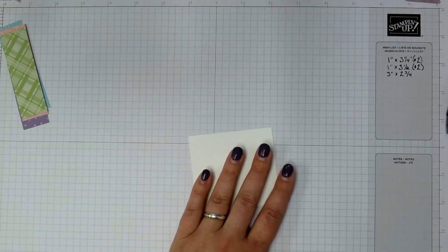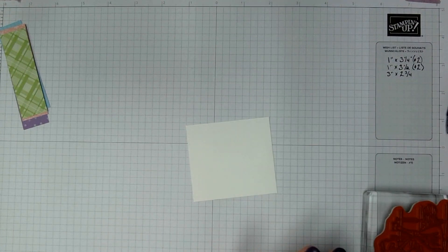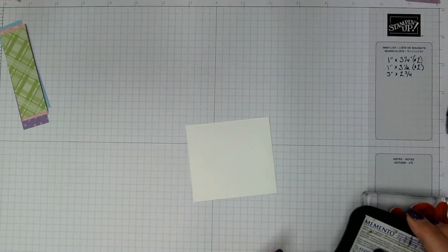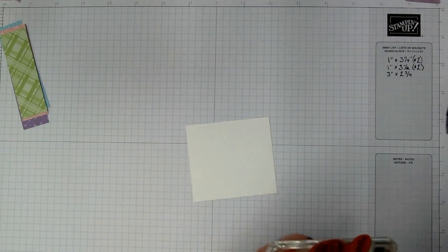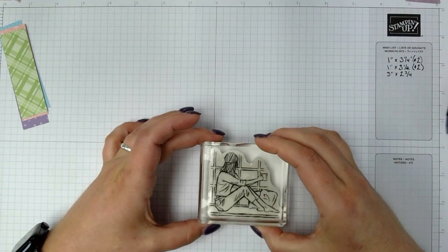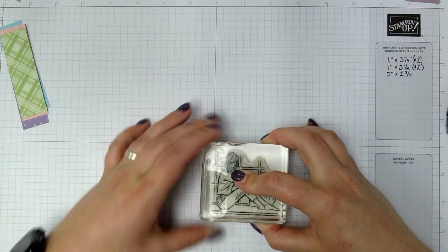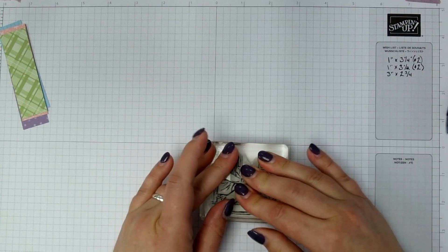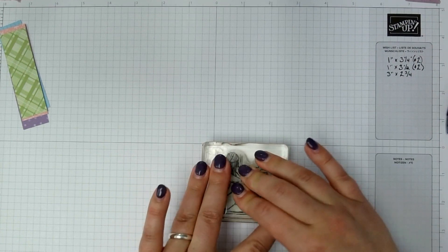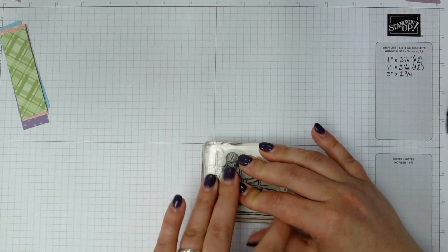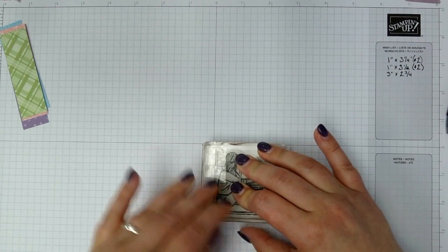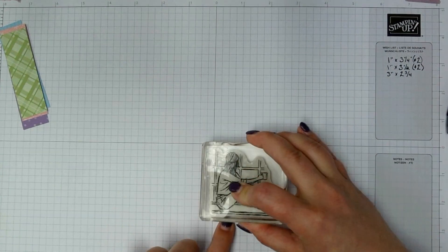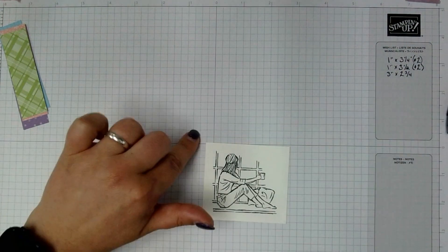And then this is the piece I'm stamping on. I'm just using Memento Tuxedo Black Ink to stamp. And this basic white card stock measures three inches by two and three quarter inches. So you want three inches wide by two and three quarter high.